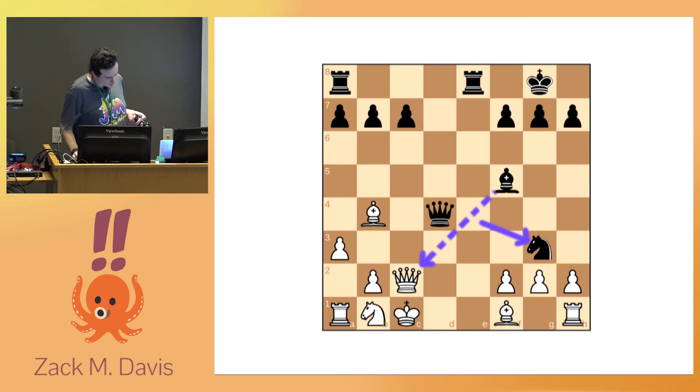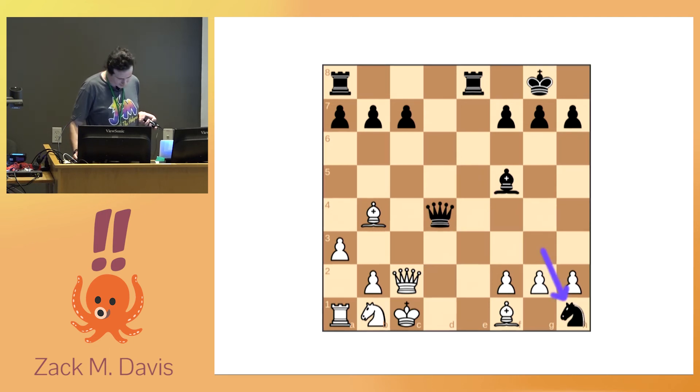Saving the queen is more important to white than capturing the black knight. So that allows black to use her next turn to capture the white rook on H1. But this is pretty weird, right? The algorithm has gone to all this trouble to set up a discovered attack on the white queen in order to capture the white rook, not the queen.